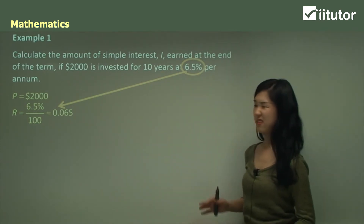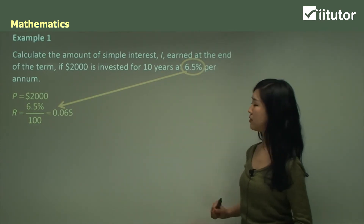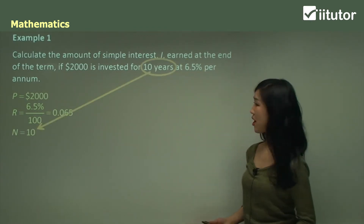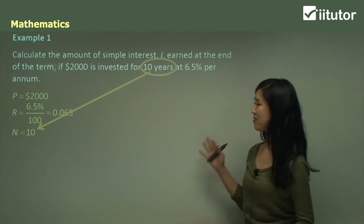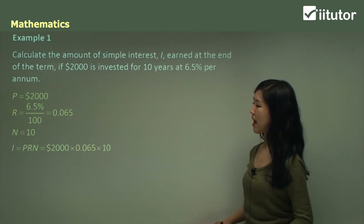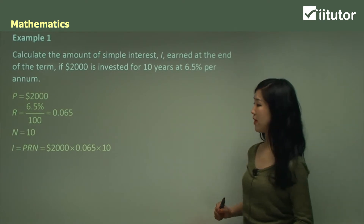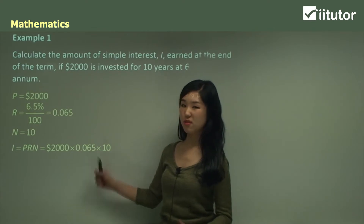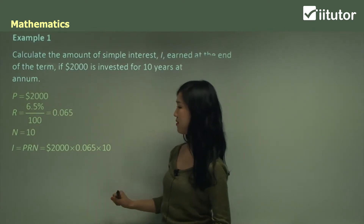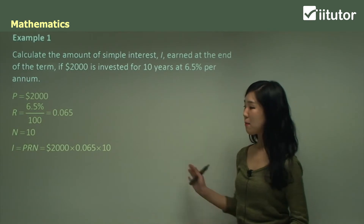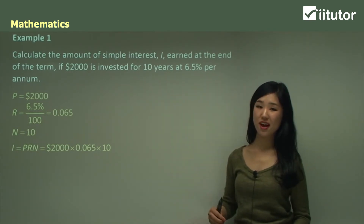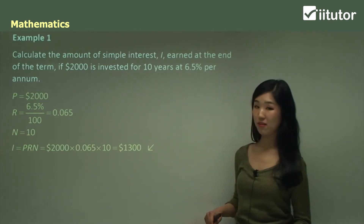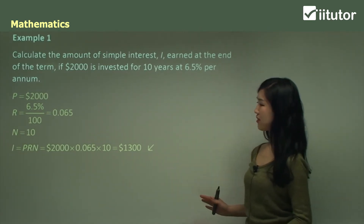Work with the decimal since it's easier. The number of periods N is simply 10 years. Now put it into the formula: I equals P times R times N, so 2000 times 0.065 times 10. Multiply all together or put it into your calculator and you should get $1,300. Really easy — that's simple interest.